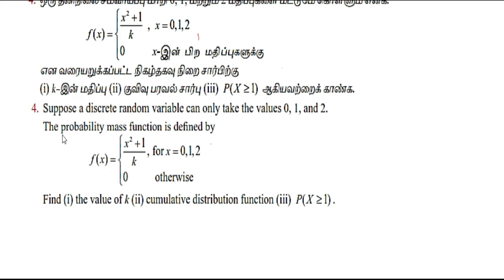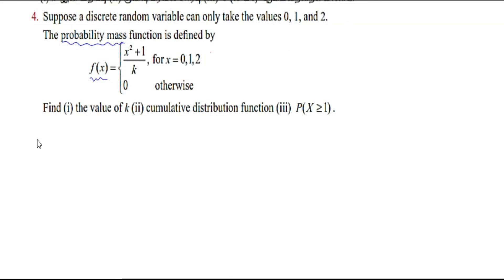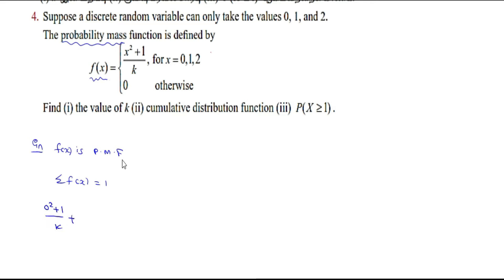Solution: To find the value of k, we use the property of the probability mass function. Since f(x) is a probability mass function, the summation of f(x) must equal 1. Applying x = 0, 1, 2: (0² + 1)/k + (1² + 1)/k + (2² + 1)/k = 1.